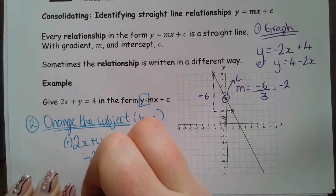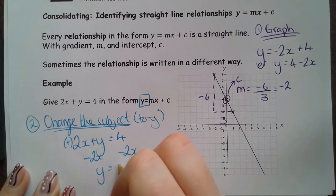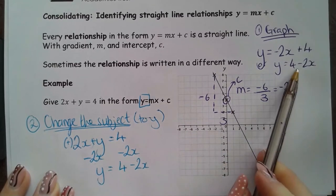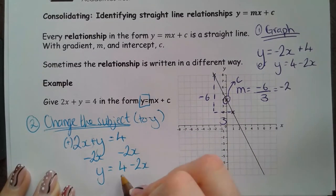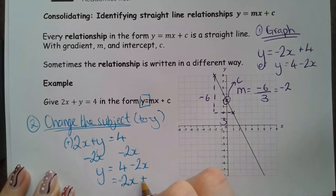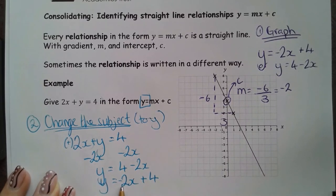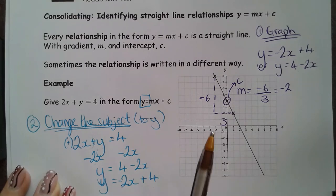That means to get rid of it, what I need to do is take 2x from both sides. So, y equals 4 minus 2x. Which is exactly what we had here. Or, I can reverse everything around and have minus 2x plus 4. And that tells me that my gradient is minus 2 and my y-intercept is 4. Just like we had on the graph to begin with.